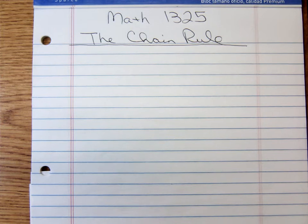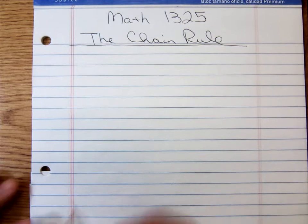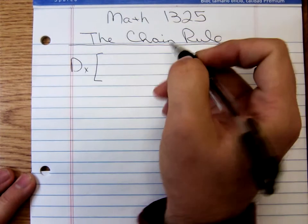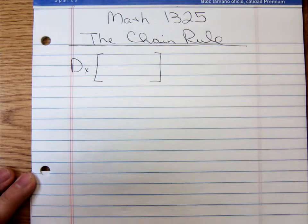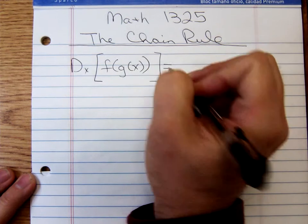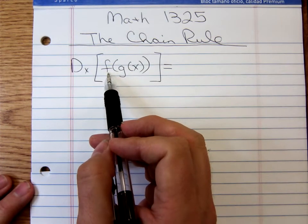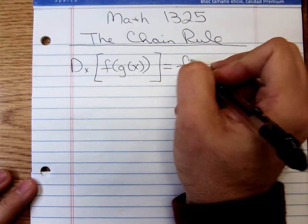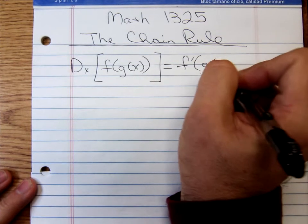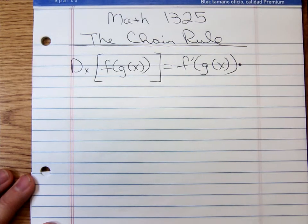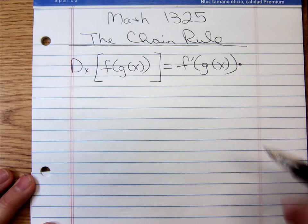The chain rule is a derivative rule that's used to differentiate compositions of functions. If you want to differentiate with respect to x some composition — say f of g of x — you differentiate the outside function leaving the inner function as it is, then multiply by the derivative of the inside function.